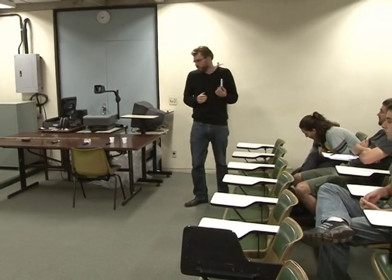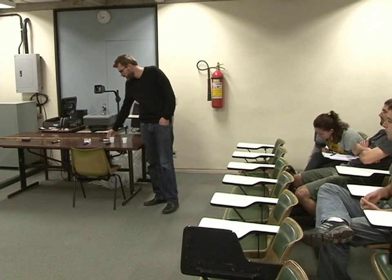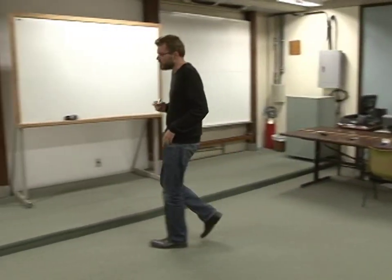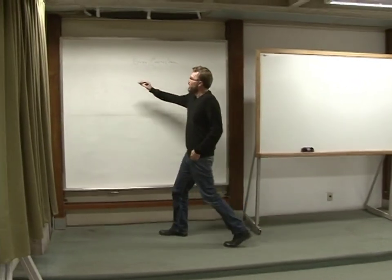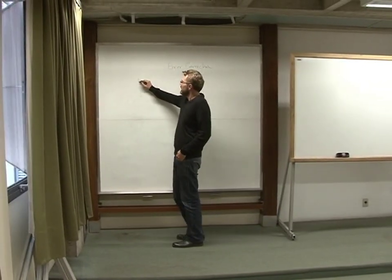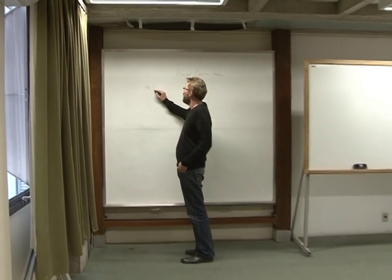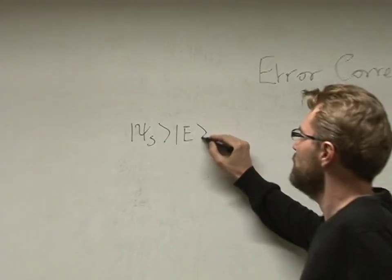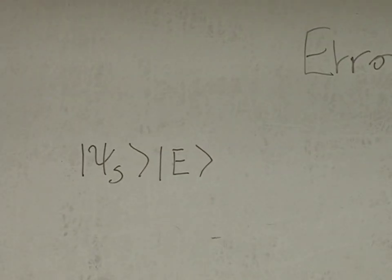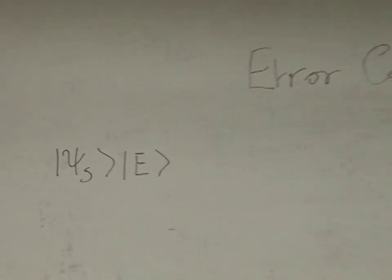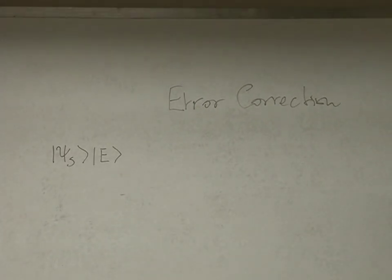Yesterday we spoke a little bit about error correction. The main point was that you can always write a general error as the state of your system times some environment. We've seen all sorts of environments with many qubits, harmonic oscillators, or whatever is the nature of the environment.